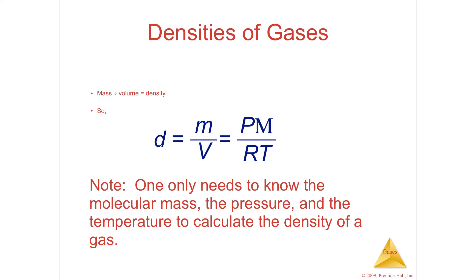The density is going to be its mass over its volume, which is its pressure times the molecular mass of the material divided by RT.